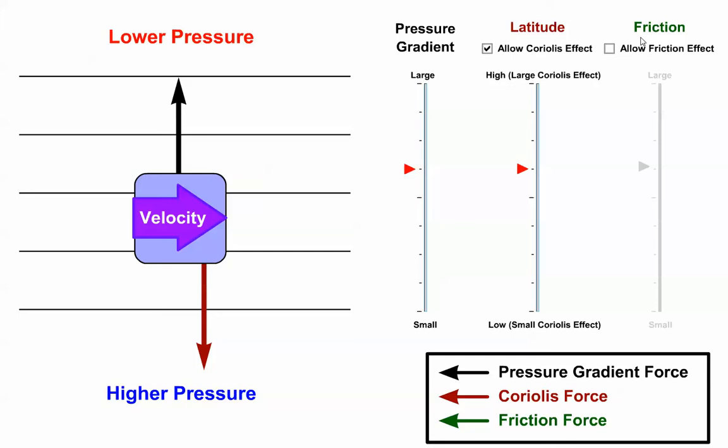We'll start with a parcel in geostrophic balance, which means that we'll ignore friction for a moment. This parcel would move parallel to local isobars with lower pressure on its left, thanks to the balance of the pressure gradient force and the Coriolis force.